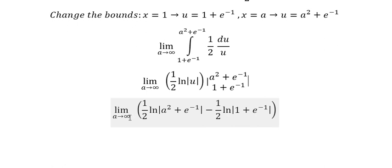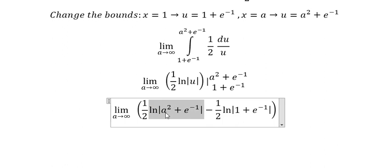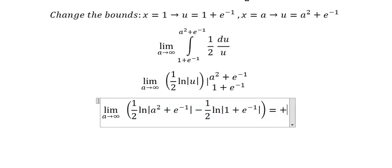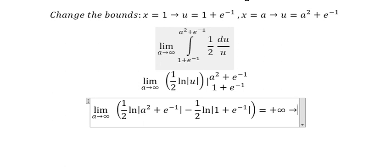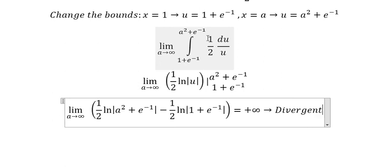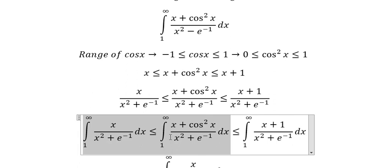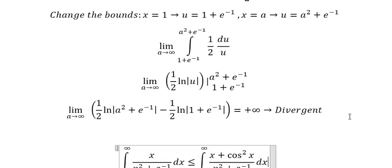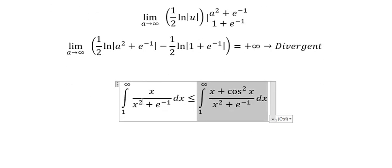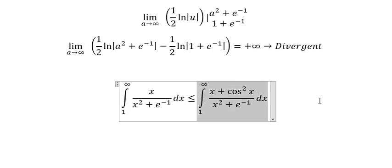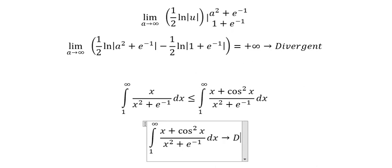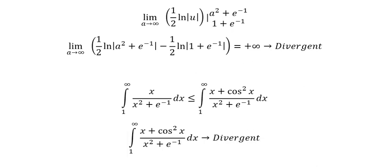When a approaches positive infinity, this expression goes to positive infinity, so everything goes to positive infinity. That means this integral is divergent. Because of the comparison test, since this integral is larger than the other one and this one is divergent, that means the original integral should also be divergent.